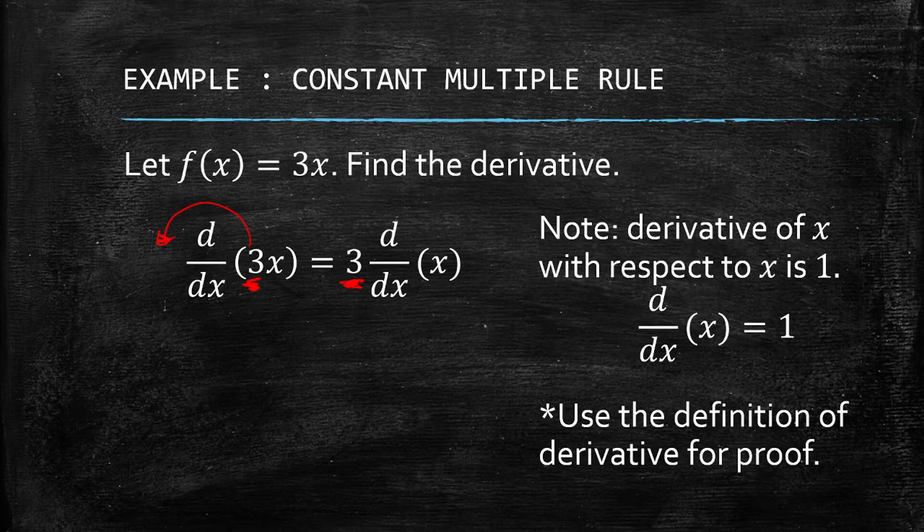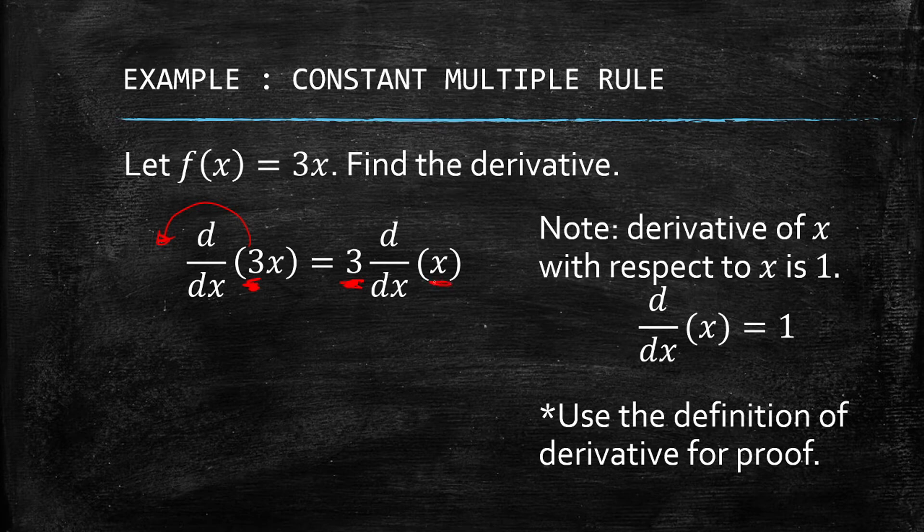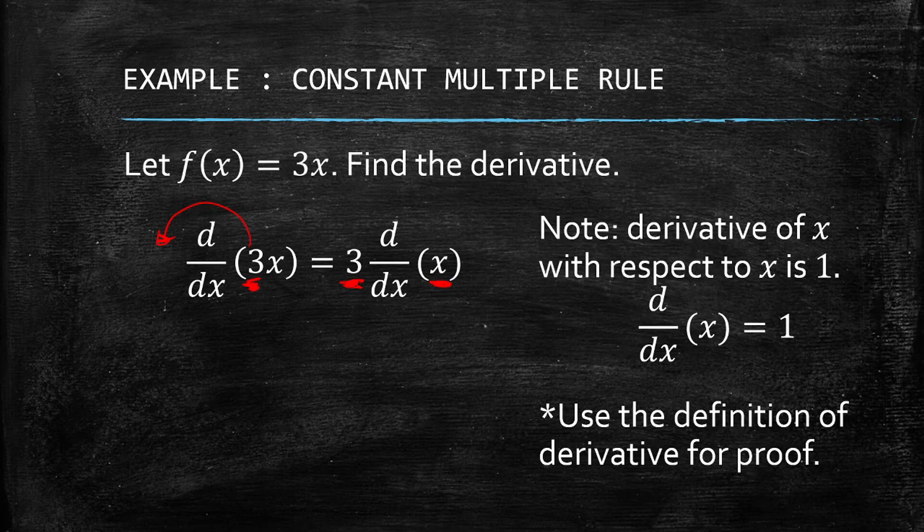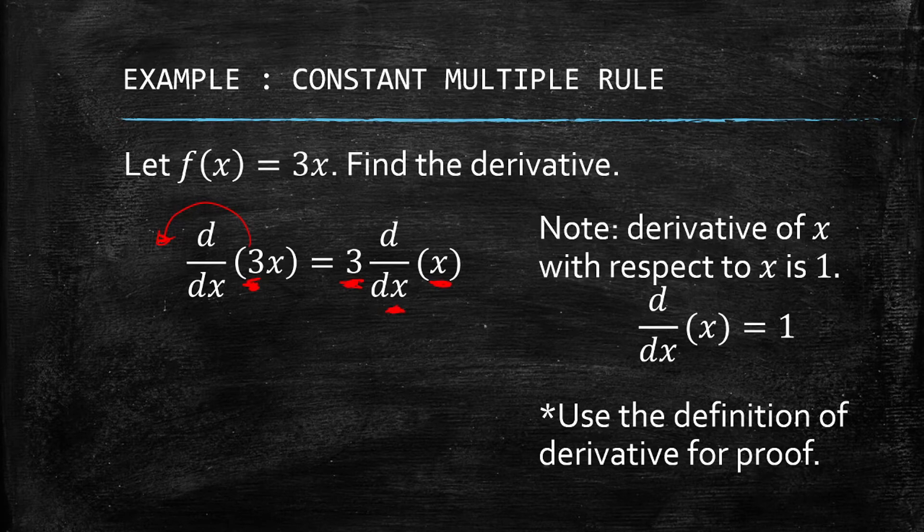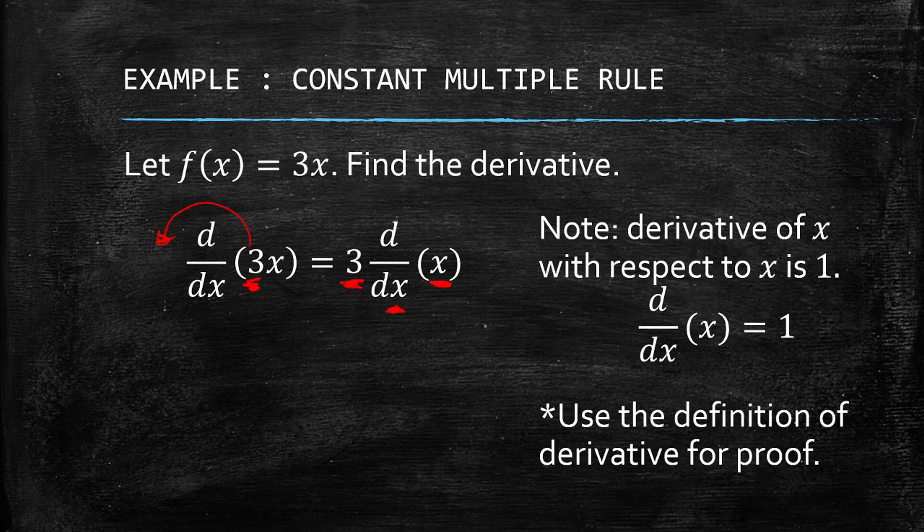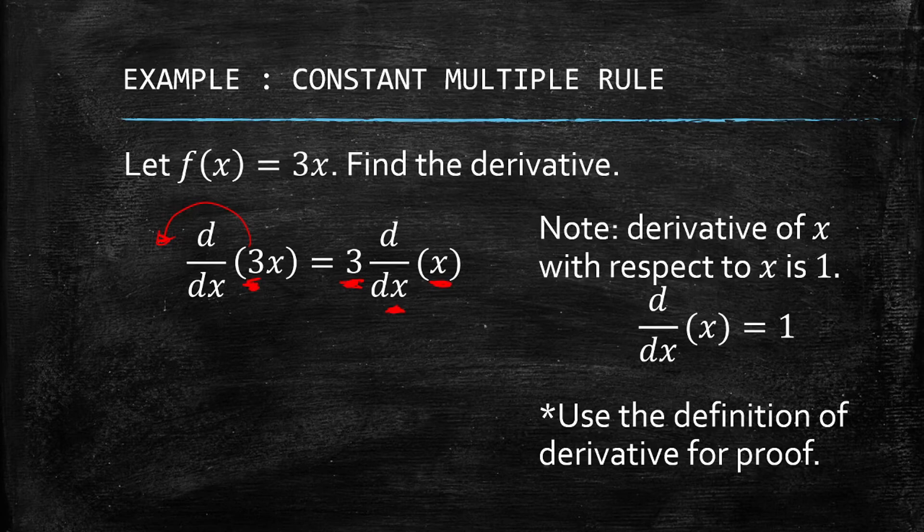If the function is just a variable without any coefficients or exponents, and we have dx here implying it's with respect to x, the derivative of x with respect to x is just 1. So we have now 3 times 1, which is 3.